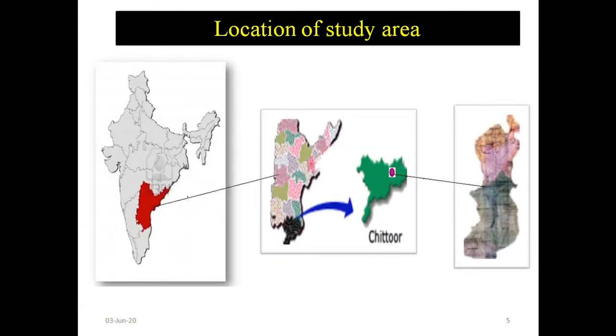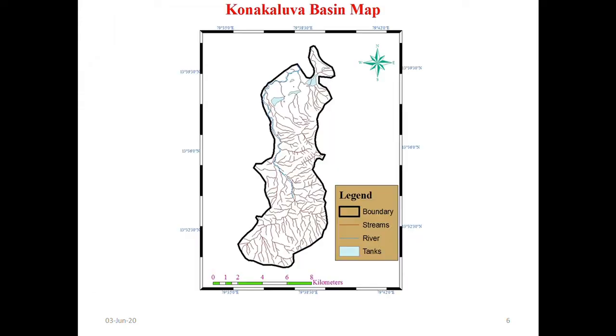This is the location of the study area, that is Konakalava watershed, which is a sub-watershed of Sonamukhi River, of 75 square kilometers approximately. This is the Konakalava Basin map.